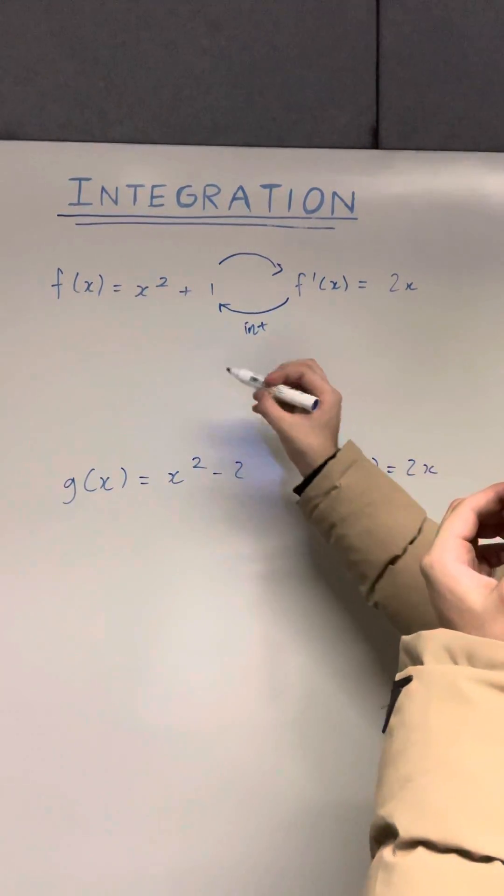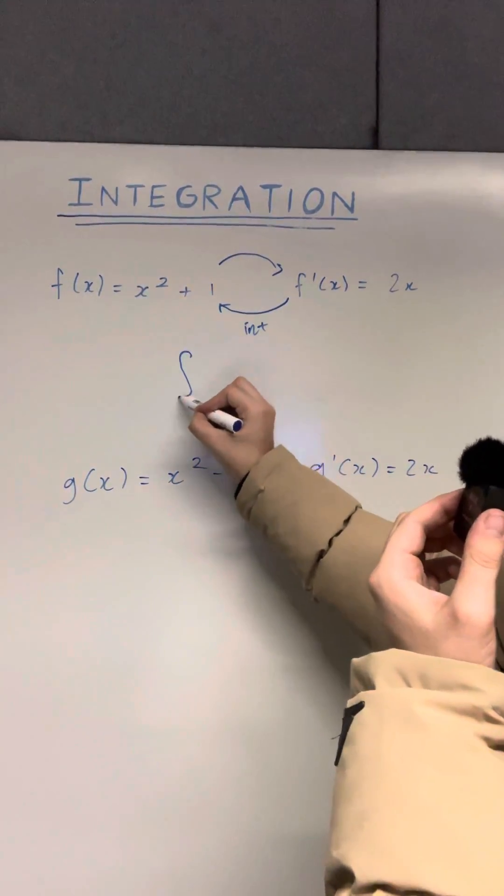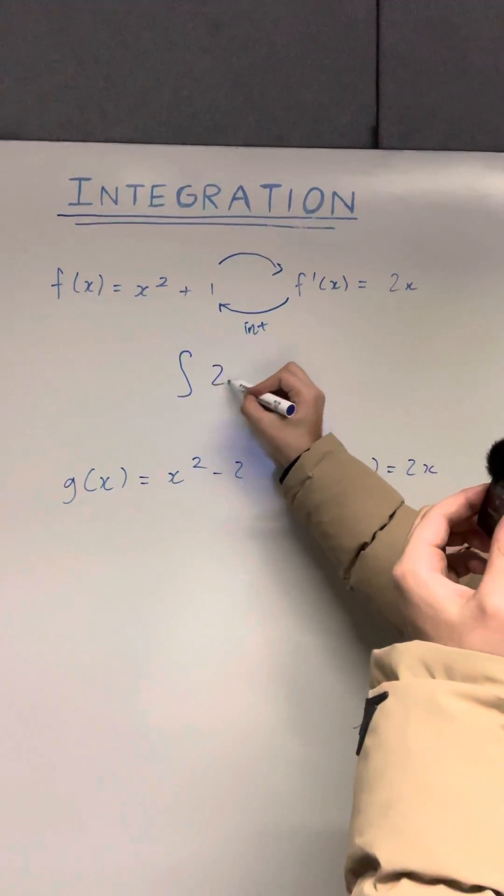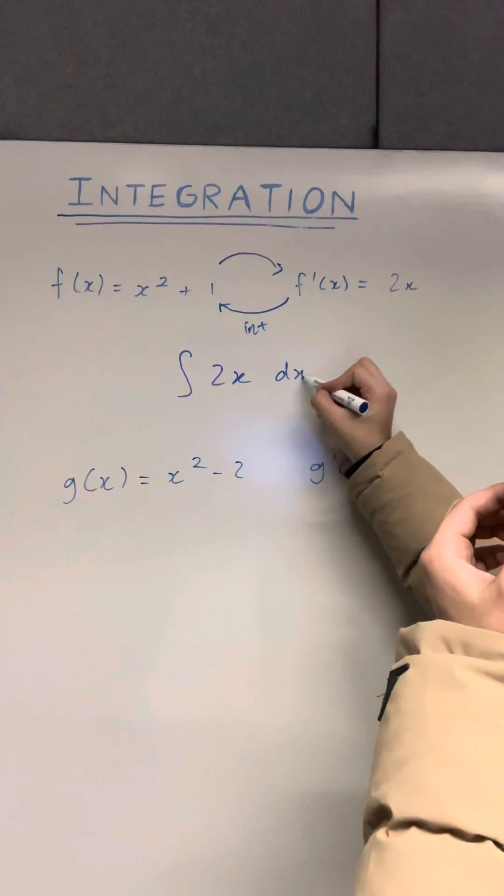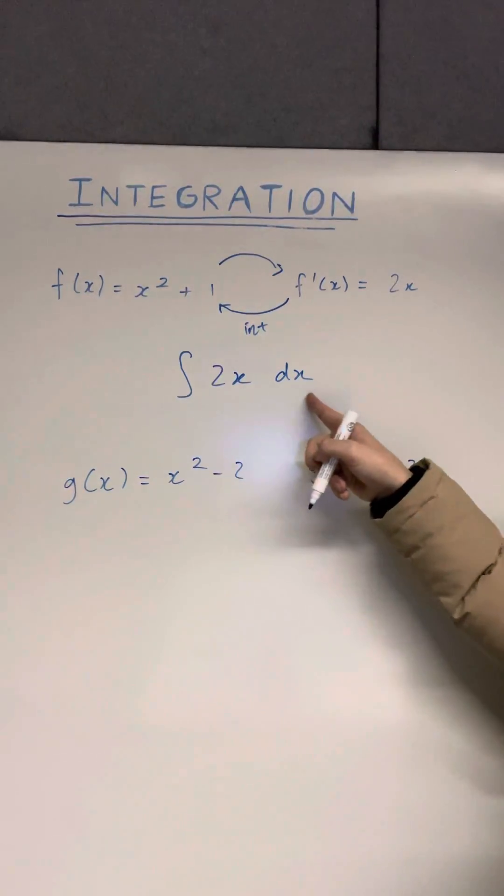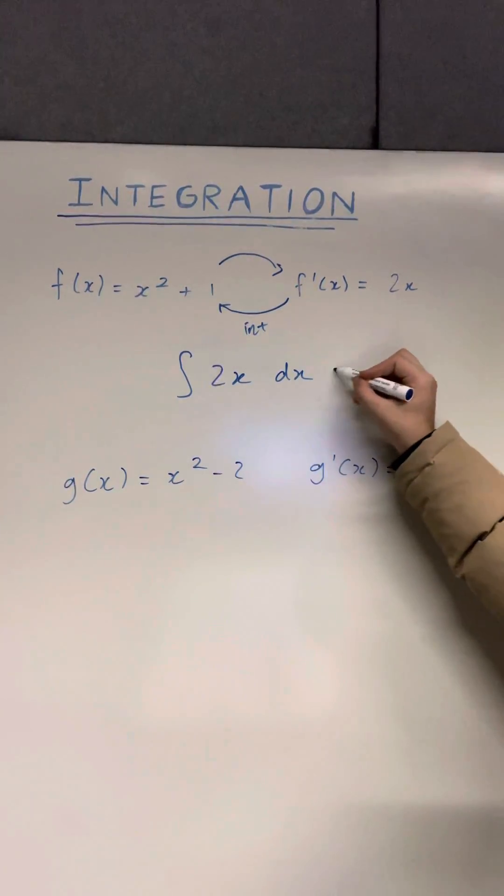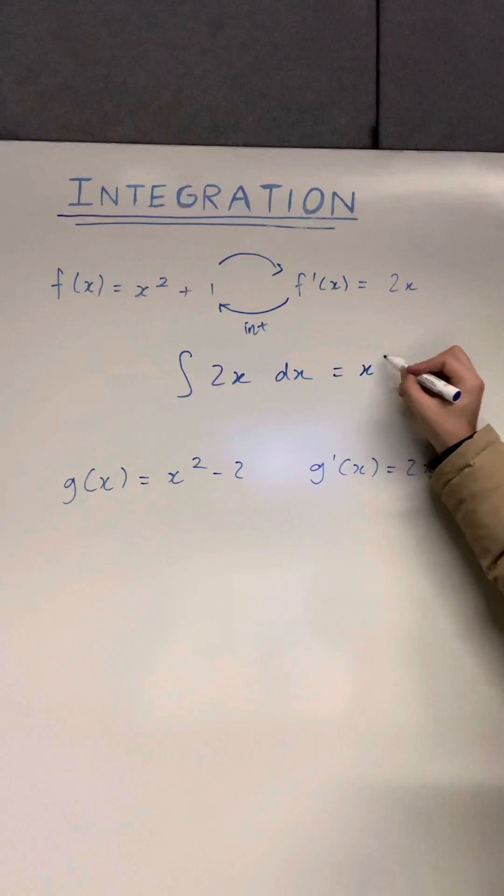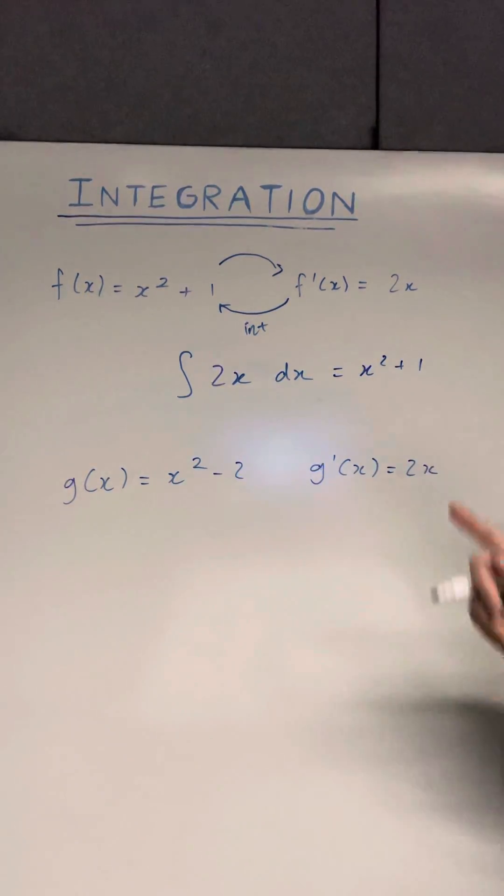Now how we write that in mathematical notation is we write the integral, which is like the squiggly line here, of two x, which is what we're trying to integrate. And then we put dx on the outside. That just represents what variable we're integrating with respect to. And in this case, we're going to get x squared plus one in this specific case.